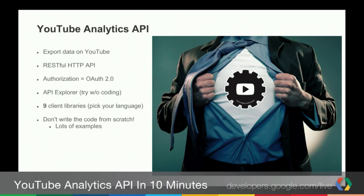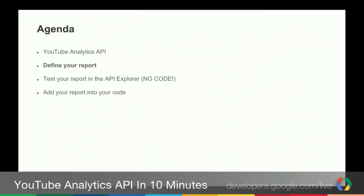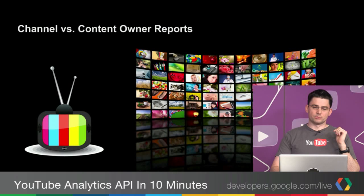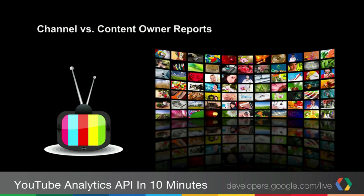Let's get started and define your report. There are two types of reports you can get: you have a channel and a content owner report. Today we're going to cover a channel report, which is basically just getting the information for a specific channel. For partners who have multiple channels, they can do a content owner report where they can get information on one of their channels or all their channels and kind of bundle it together.